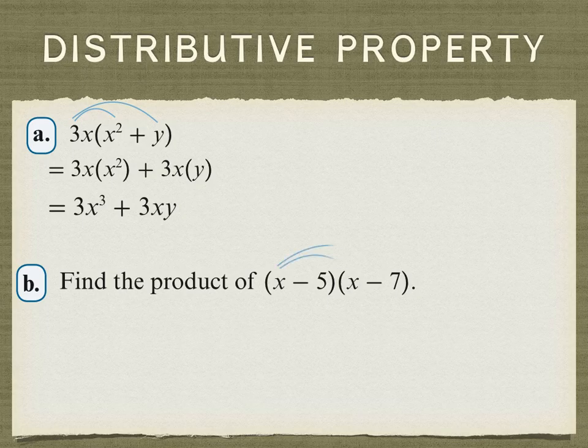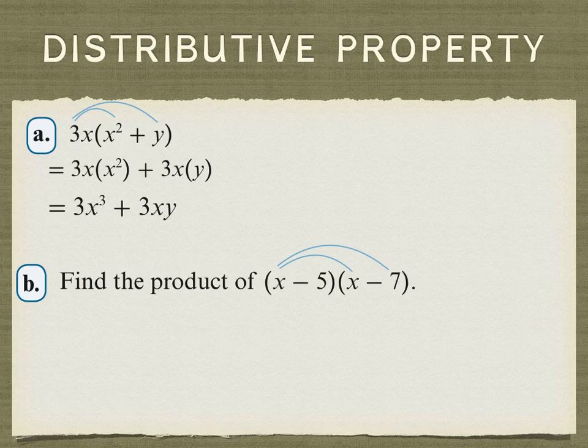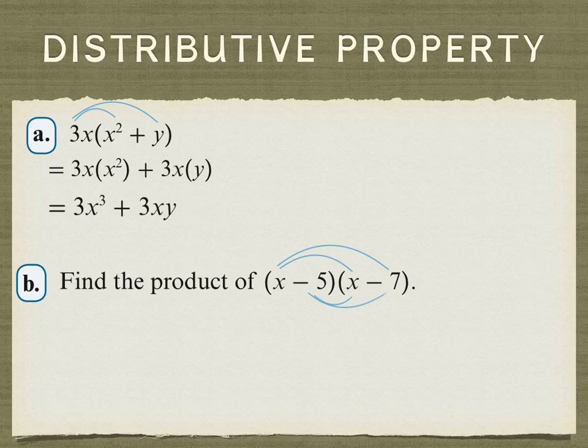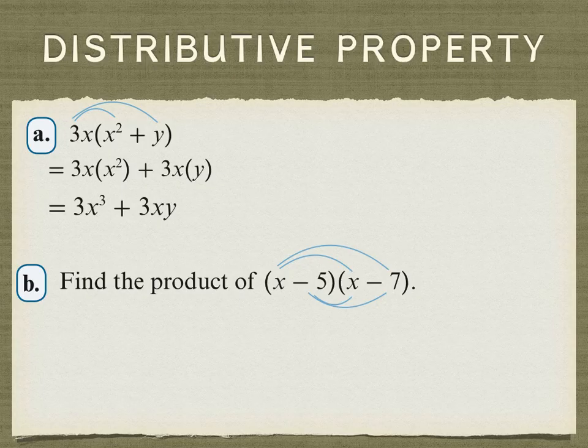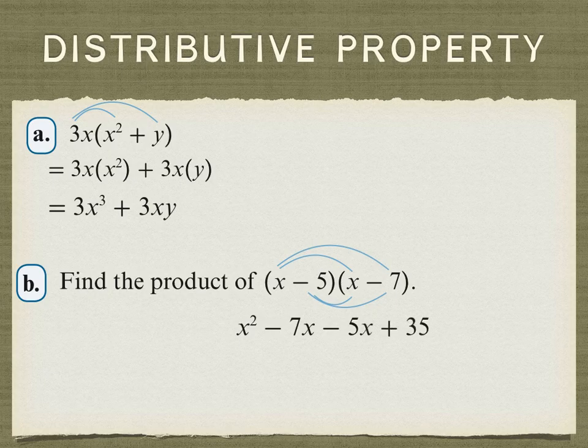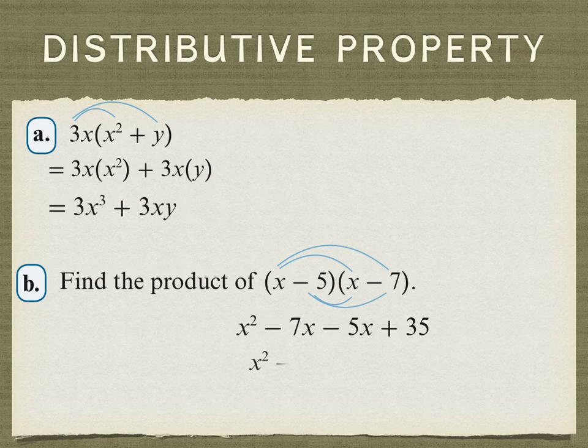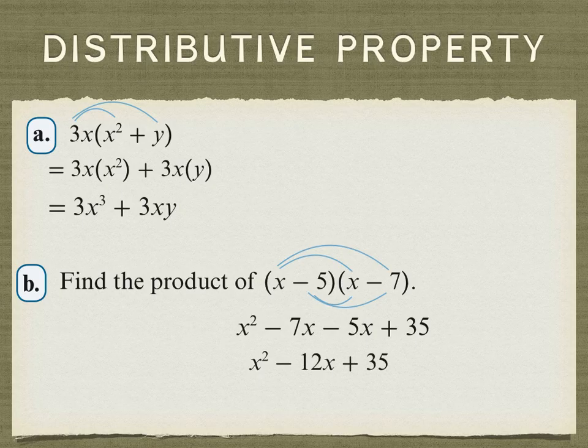We can use the distributive property in the second example. We can multiply x times x and negative 7, and then negative 5 times x and negative 7. And we can combine the two middle terms, giving us a product of x squared minus 12x plus 35.